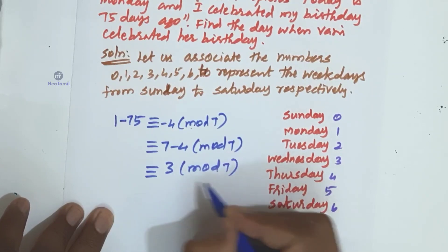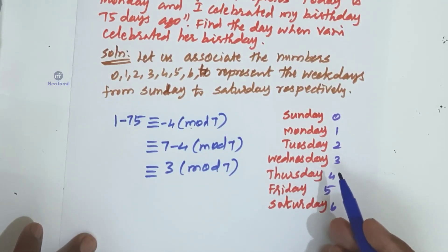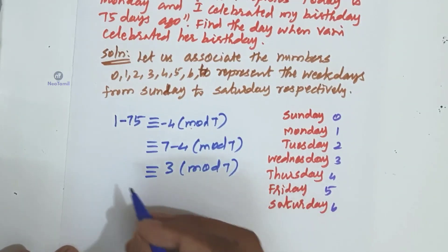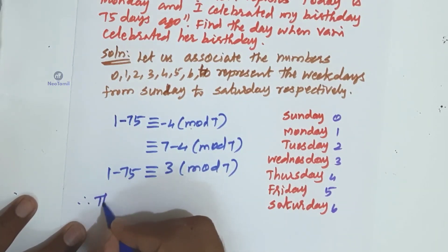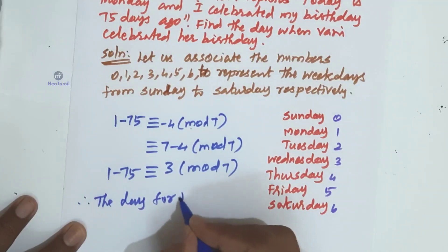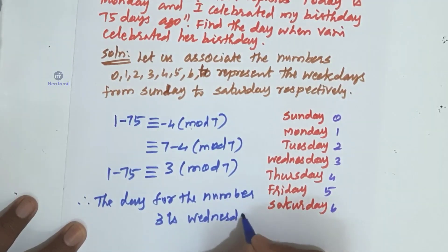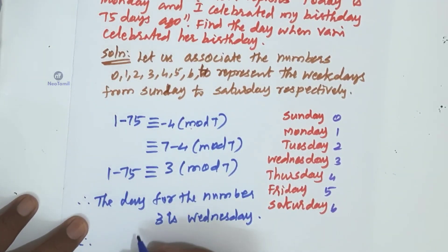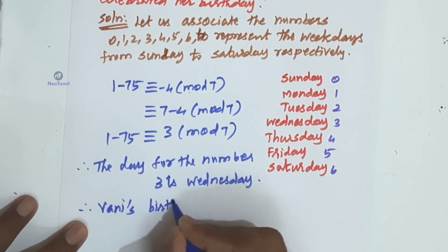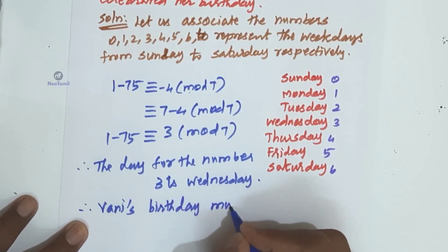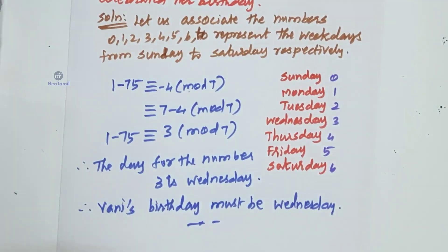3 mod 7 is positive. The number 3 represents Wednesday. Therefore, Vani's birthday must be on Wednesday. So this example is complete. The concept is easy to understand.